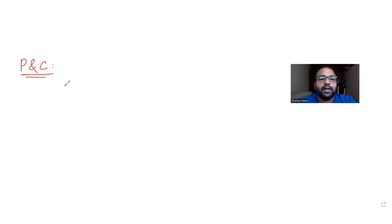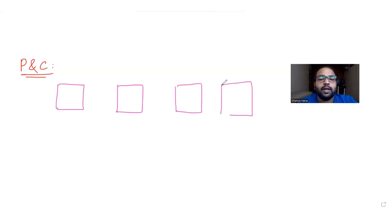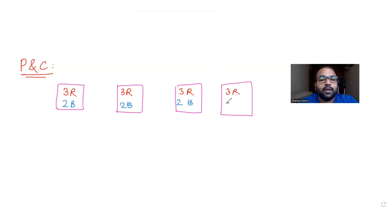Today's question is from the topic of permutations and combinations. Consider four boxes where each box contains three red and two blue balls. So basically we have a total of 20 balls, and they are telling us to assume that all 20 balls are distinct — they are not identical.